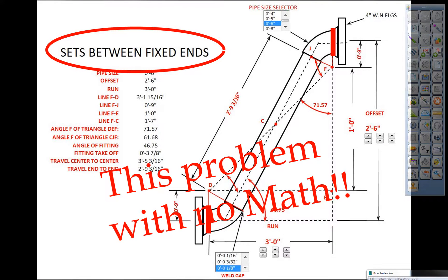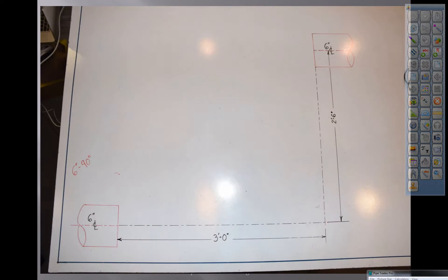We're going to do this problem with no math. You can see I drew it up to scale here. Everything is square, plumb, and perpendicular. Drawing to scale.